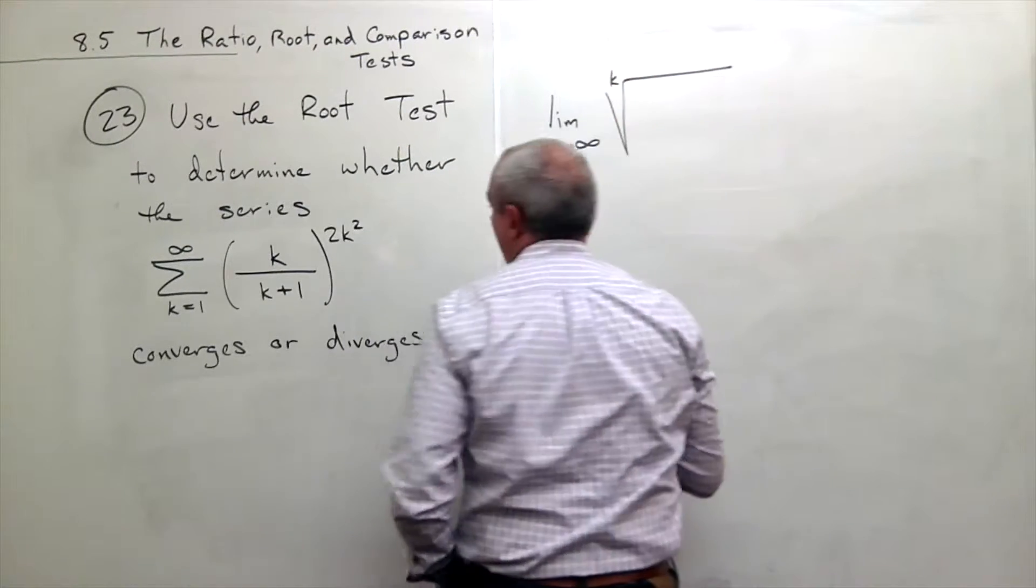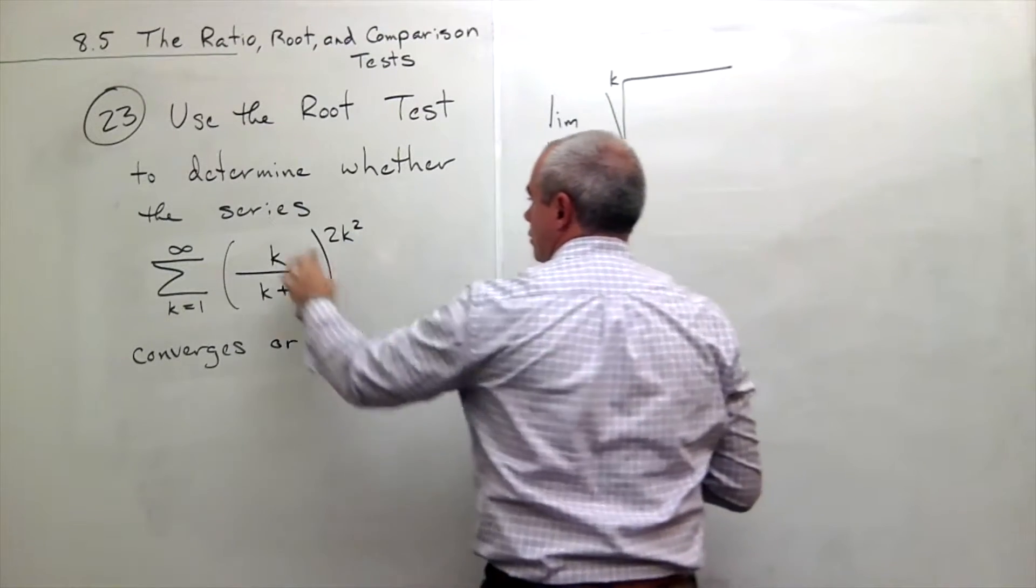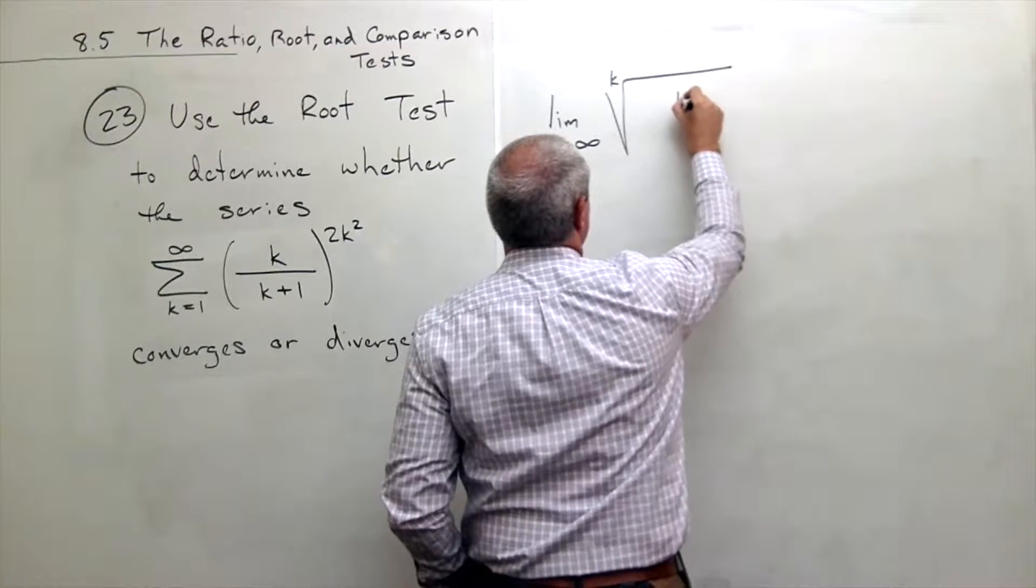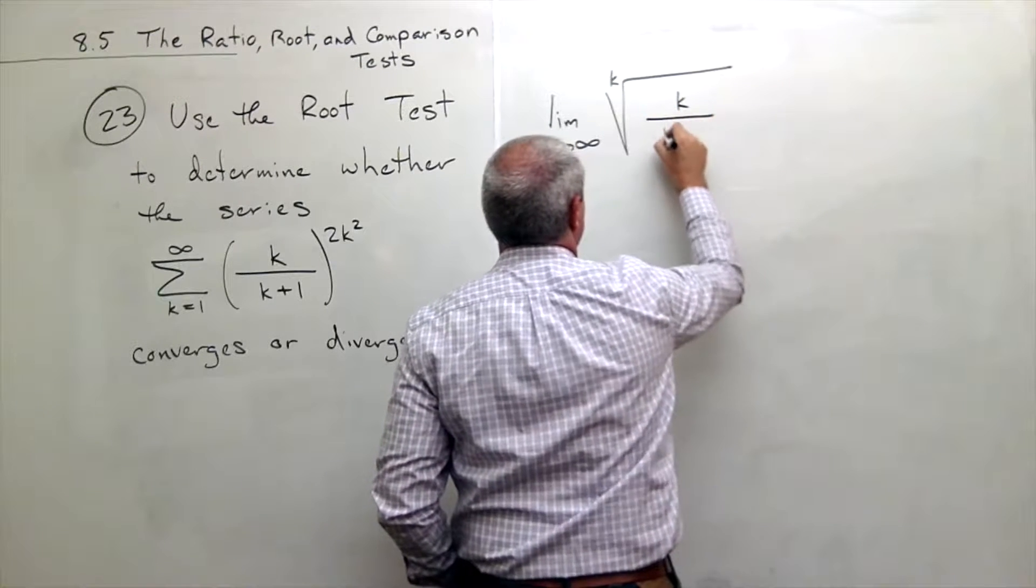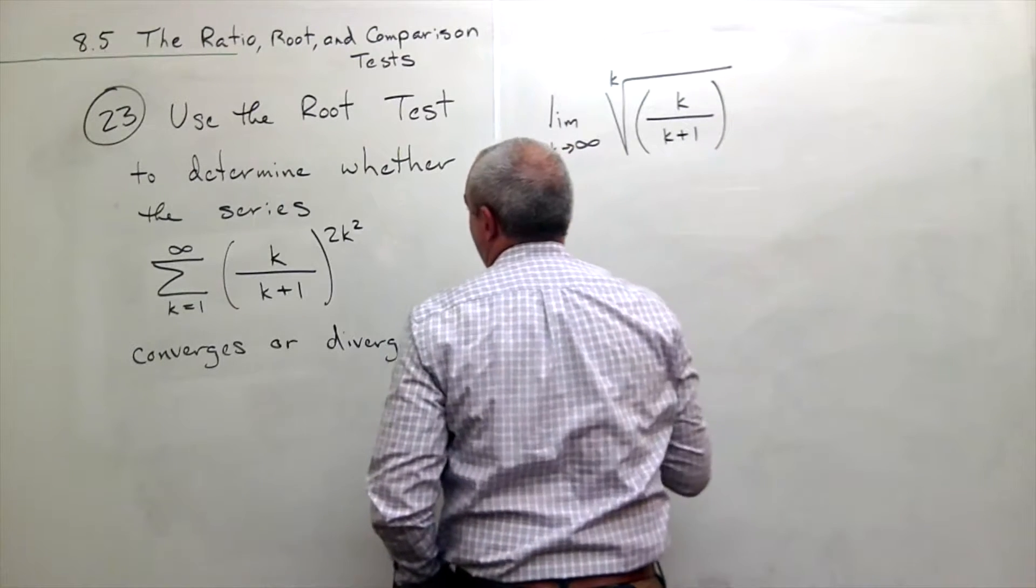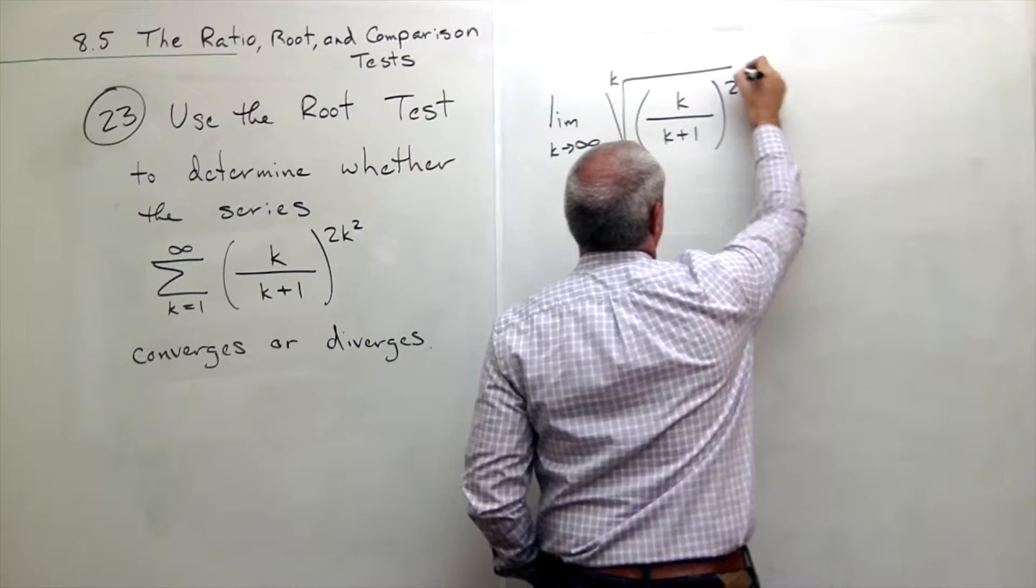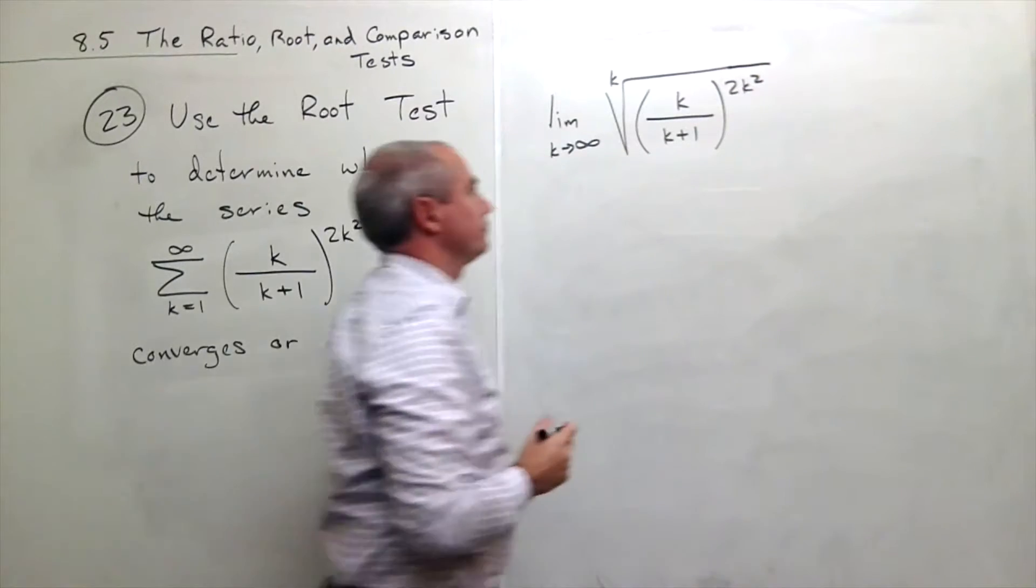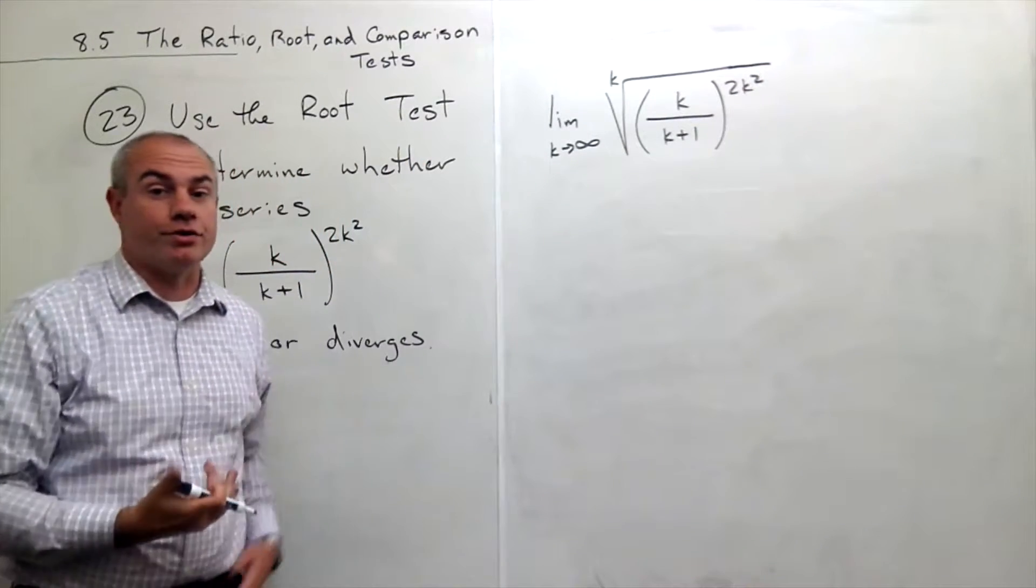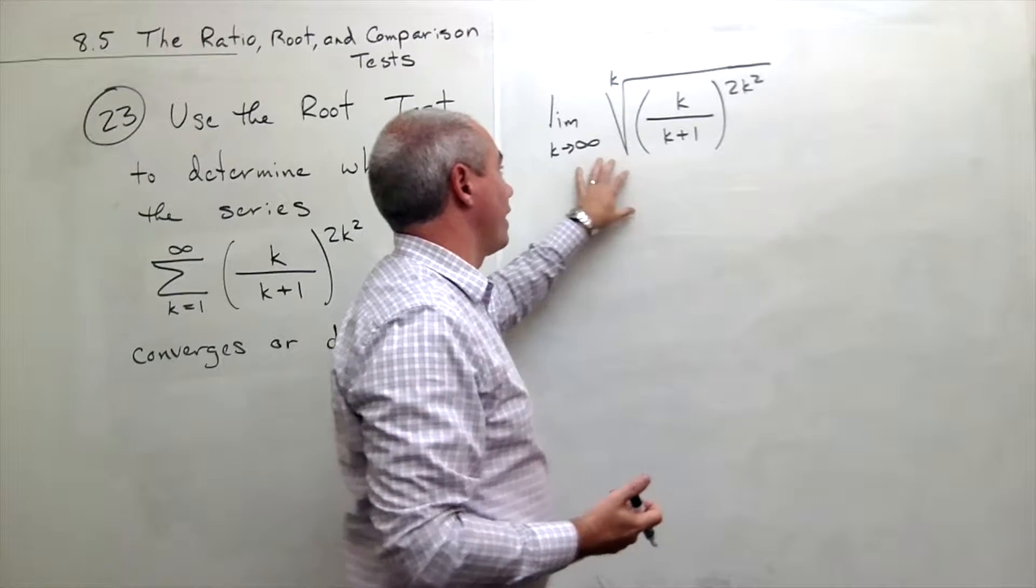of this sequence. So let's write in k over k plus 1 to the power 2k squared. So what I want to do to actually perform the root test is I need to find this limit.